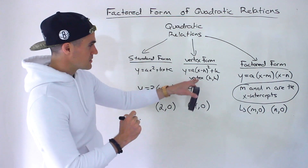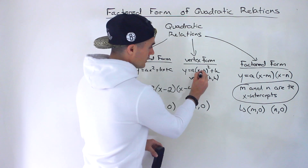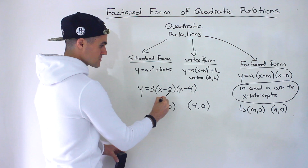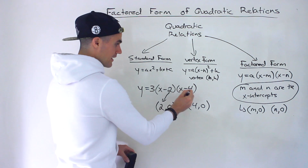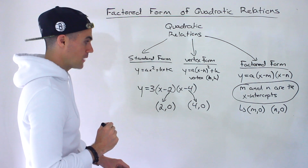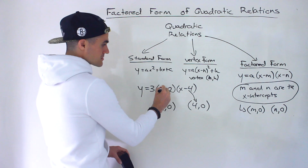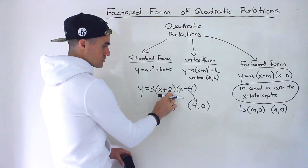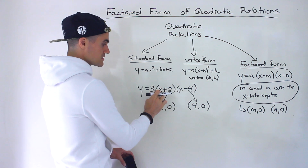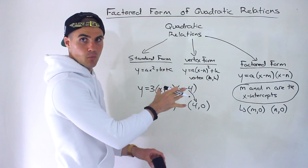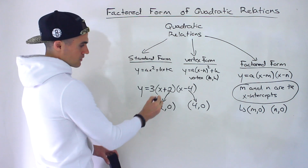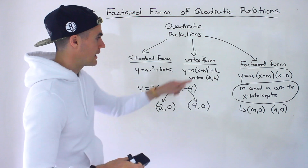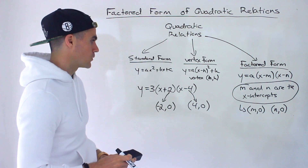Another thing to mention: very similar to the h value in vertex form, where if we had x minus h it would be the opposite sign for the vertex — same thing here. We have x minus two, so the intercept is positive two; x minus four, so the intercept is positive four. If we had x plus two instead, the intercept would be negative two, because negative two plus two gives zero. It's always going to be the opposite sign, and as we do more examples you'll get used to that, just as you did with vertex form.